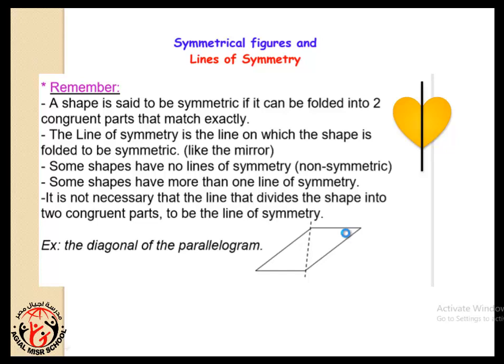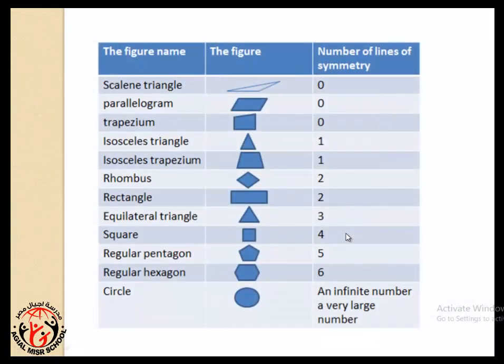Let's see with me how many lines of symmetry in each shape. Scalene triangle, no lines of symmetry. Parallelogram, no lines of symmetry. Trapezium, no lines of symmetry.